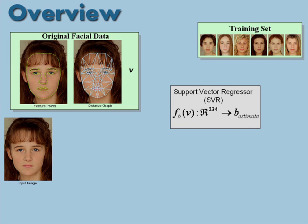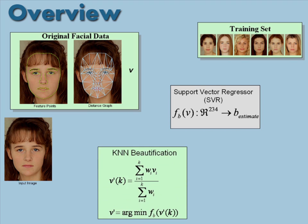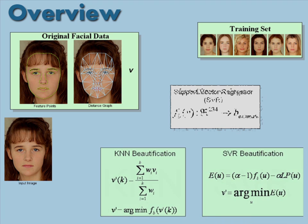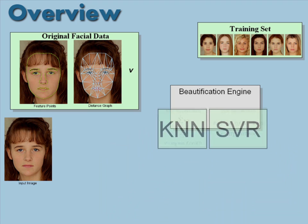To enhance the attractiveness of an input image, we use our attractiveness estimating machine to find a new feature distance vector V' with a higher attractiveness estimate. We propose two complementary techniques to achieve this: one is based on weighted K nearest neighbor search, and the other is an SVR driven optimization.